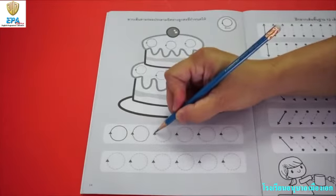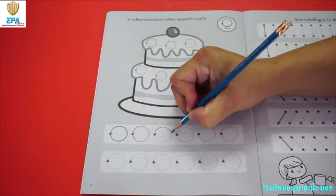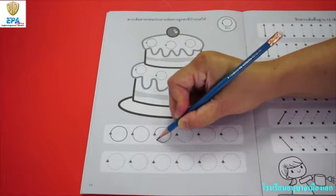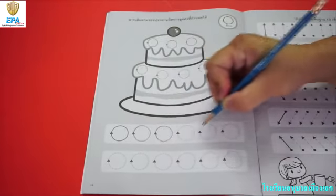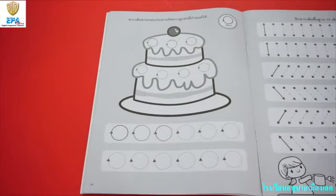One more time. Go up. And then go down. Finish all the patterns that you can see on your book on page number 14.